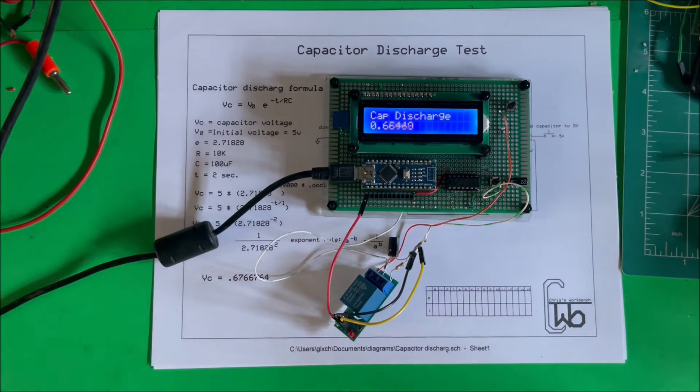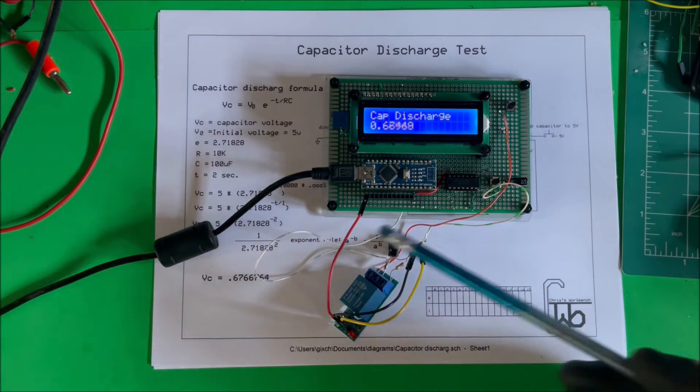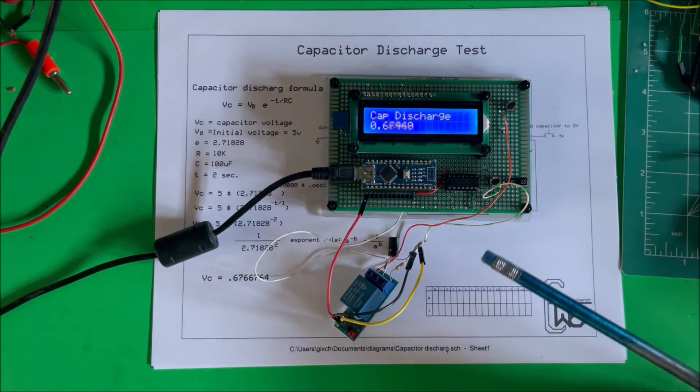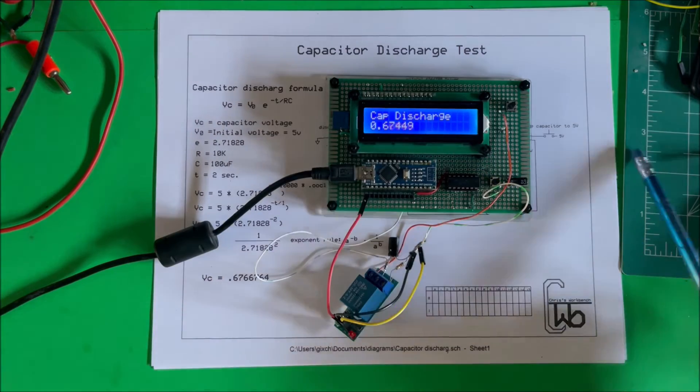Now the resistor is only a 5% and the capacitor is the same thing. And all this wiring I have in here probably has some inductance on here, but it's close to what I calculated, 0.67 something. It's changing.